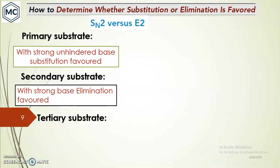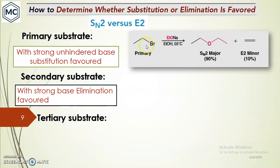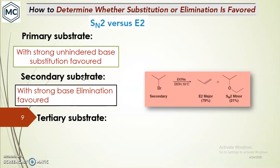Next, how do we determine whether substitution or elimination is favored? Considering SN2 versus E2: when you have a primary substrate with a strong unhindered base, substitution is favored. With a strong hindered base and a primary substrate, elimination is favored. In the case of secondary substrate with a small strong base, elimination is favored and the major product is the eliminated product.